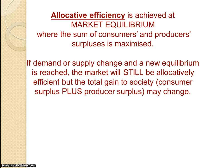Now, if demand or supply change and we end up with a new equilibrium, the market is still going to be allocatively efficient, because we're still maximizing consumer and producer surplus. But the total gain to society — the total area of consumer and producer surplus — will change.